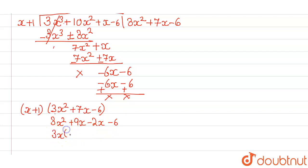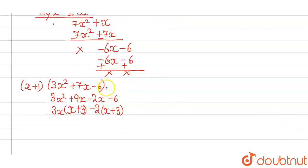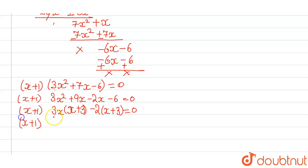3x common, this will be written as 3x, x plus 3, minus 2 common, x plus 3. So, equal to x plus 1, 3x minus 2, x plus 3.